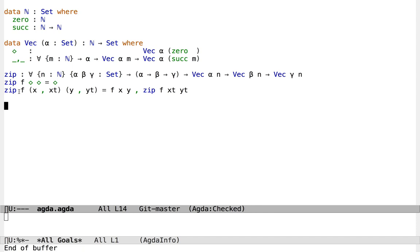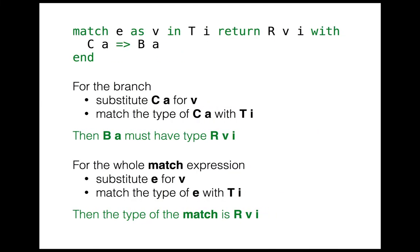Agda just works out what this value must be behind the scenes. So Agda makes this all very easy. Coq has some different ideas. Coq just has a match expression, like case in Haskell, where we match an expression e against its possible constructors. But Coq also has these optional annotations — as, in, and return — which allow us to tell Coq how we would like it to refine the result type of the match based on what we learn when we match a particular constructor.